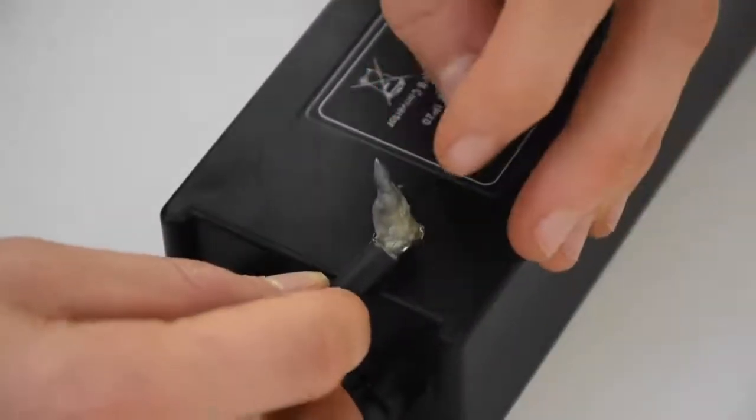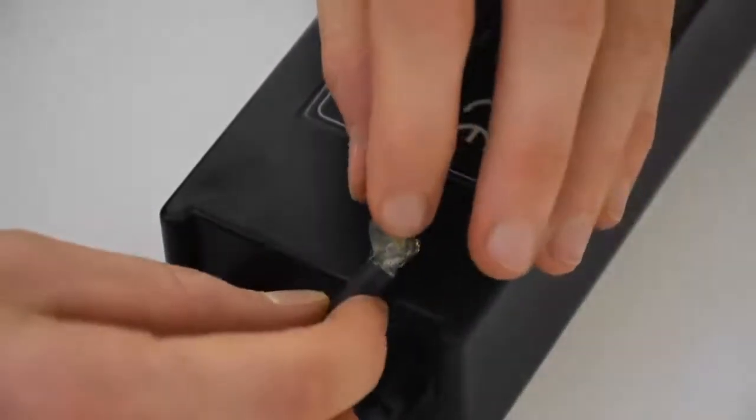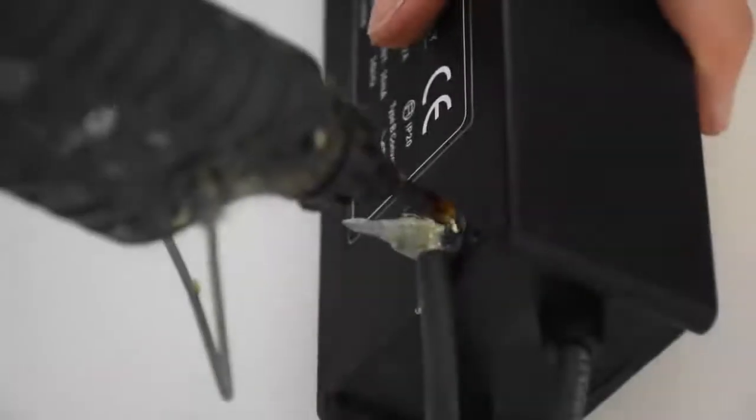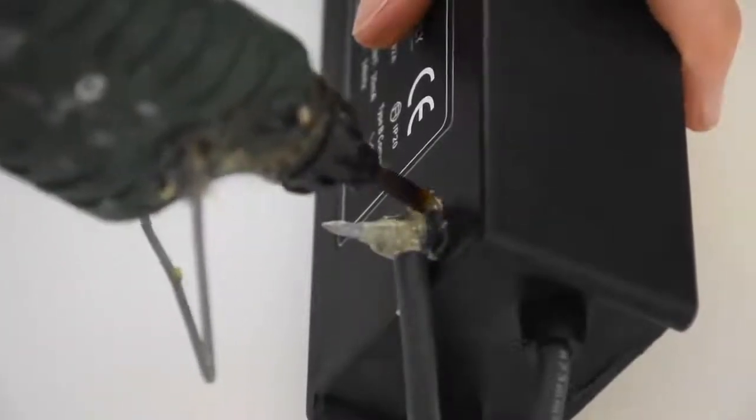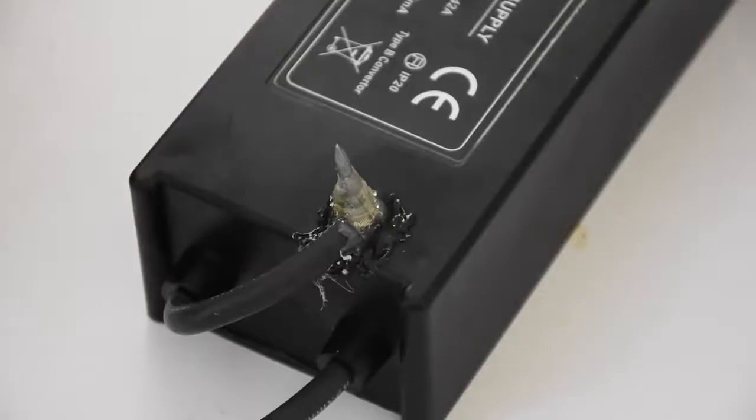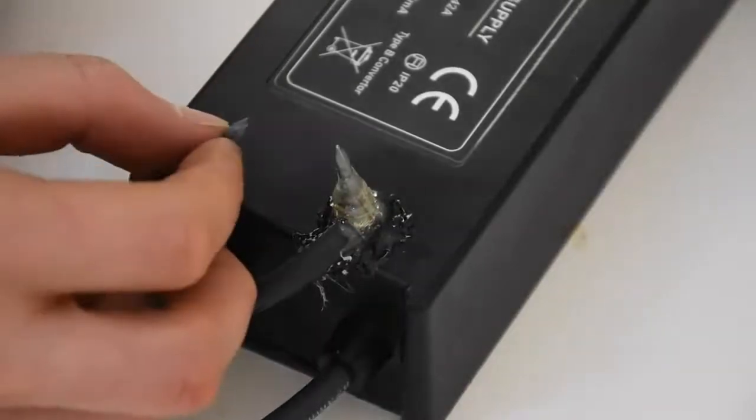Both nails are hot glued onto the transformer box so they stay secure and don't move around. Our other nail will be placed at an appropriate distance for the spark gap.